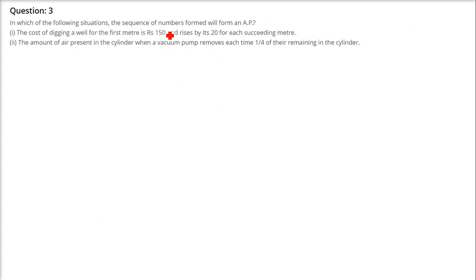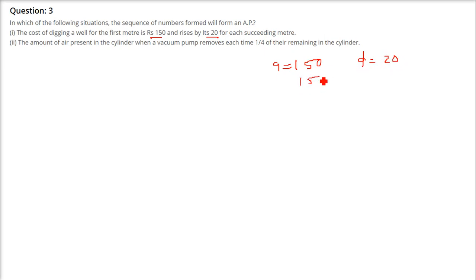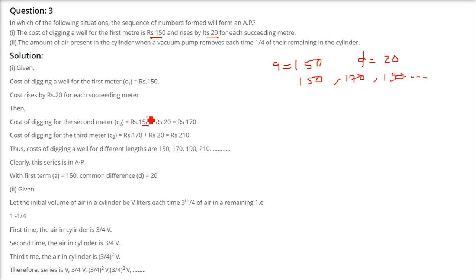In which situations does a sequence form an AP? The cost of digging a well for the first meter is 150 and rises by 20 for each succeeding meter. Here A=150 and D=20. So the sequence is 150, 170, 190... This is a proper AP.